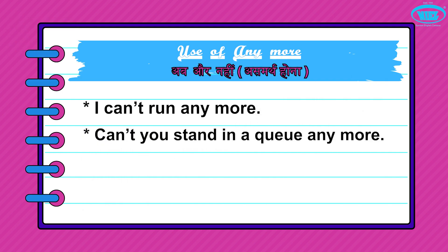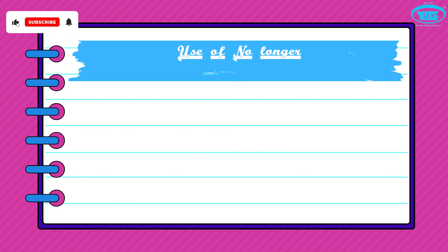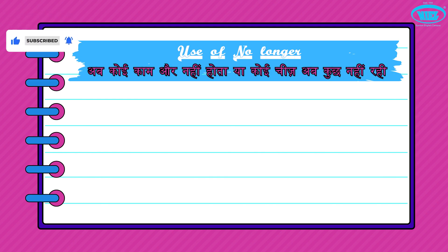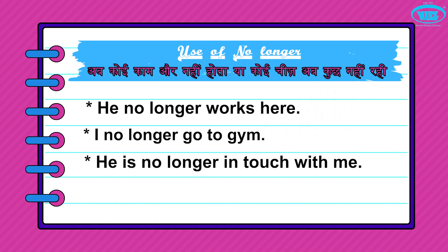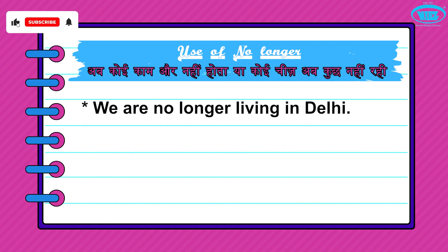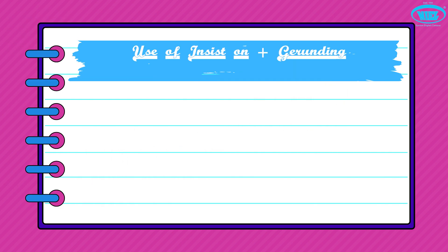Another pattern is 'no longer', which in Hindi/Urdu means 'ab koi kaam aur nahi hota ya koi cheez ab kuch nahi rahi' — something no longer happens or exists. For example: He no longer works here. I no longer go to the gym. He is no longer in touch with me. We are no longer living in Delhi. Why is Pluto no longer a planet?